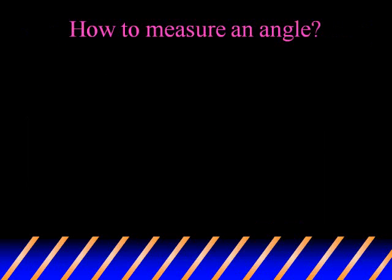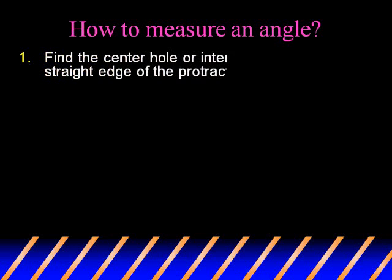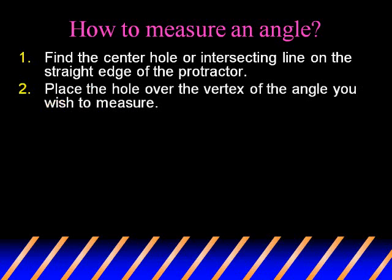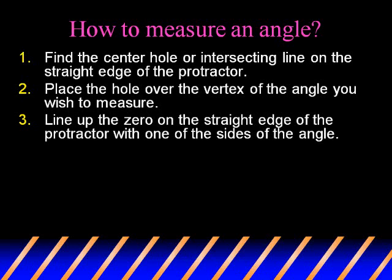How to measure an angle — these directions are for the protractor. First, find the center hole or intersecting line on the straight edge of the protractor. Place the hole over the vertex of the angle you wish to measure. Then line up the zero on the straight edge of the protractor with one of the sides of the angle.